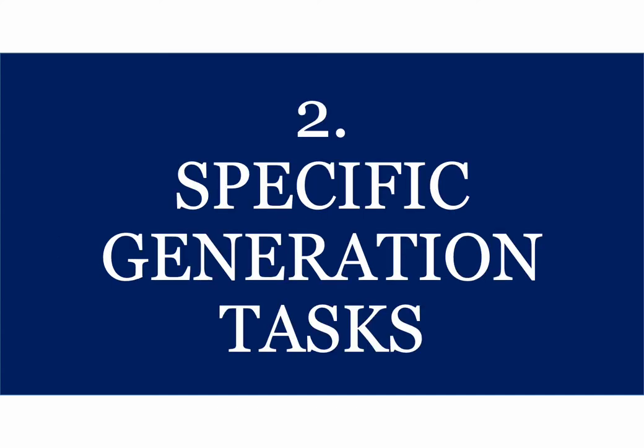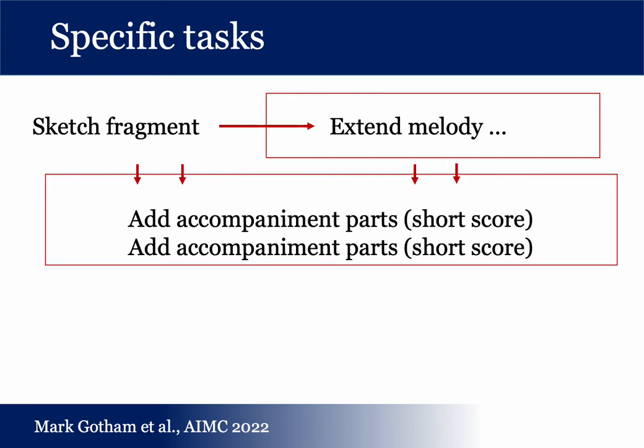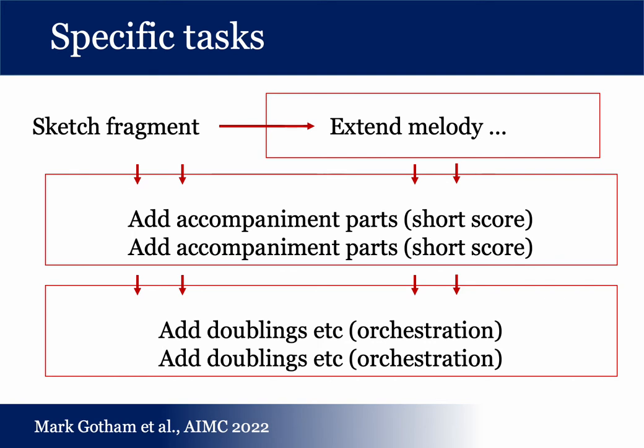We turn now to the setting of specific generation tasks. Among the many ways in which one could approach this, we choose to divide the overall task into three broad subtasks: the extension of fragmentary short sketches — usually for melodies or other sparse textures — into full longer melodies; the addition to that of accompanimental voices of some kind, contrapuntal or harmonic; and finally, the mapping of this to a full orchestral score.